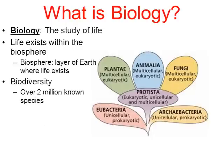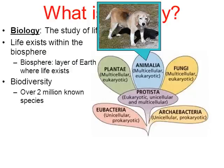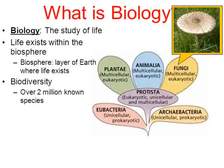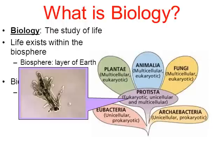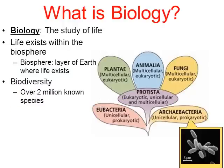Today we know there are over 2 million known species alive on Earth. When you look at this picture, here we have the six broad kingdoms or categories of life. If something is alive on Earth, it's placed in one of these six categories: plants, animals, fungi, eubacteria, and archaebacteria. All over 2 million known species live within what's called the biosphere.